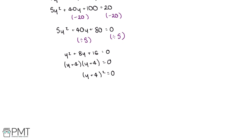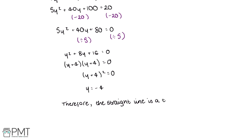In order to make this equation equal to 0, y would have to equal negative 4. There are no other values we could substitute in for y that would make this equation true. So we've shown that there's only one intersection of the straight line and the circle. Therefore, the straight line is a tangent to the circle because there is only one point of intersection.